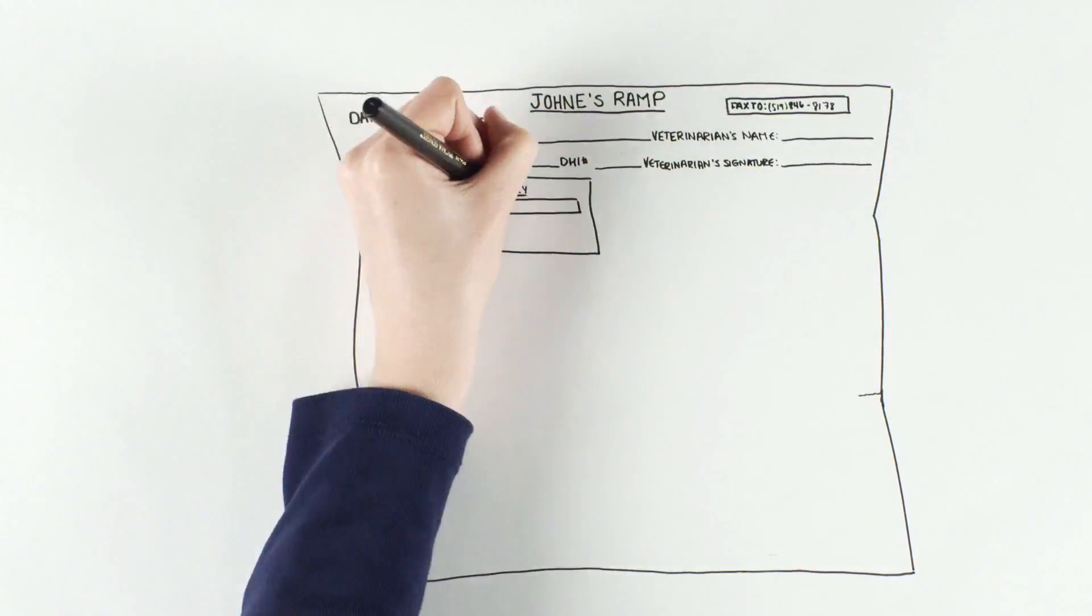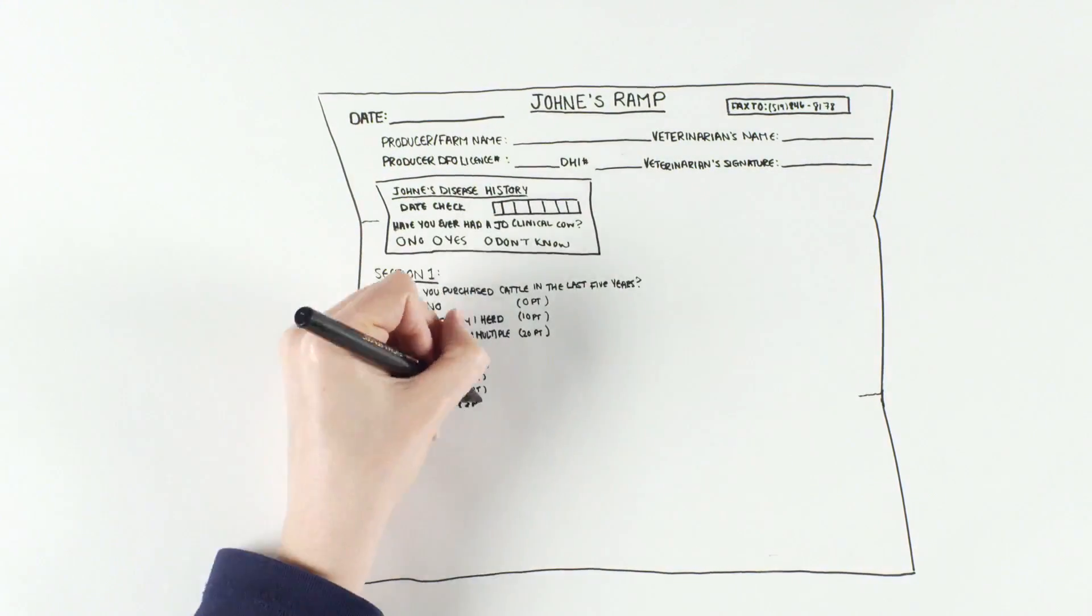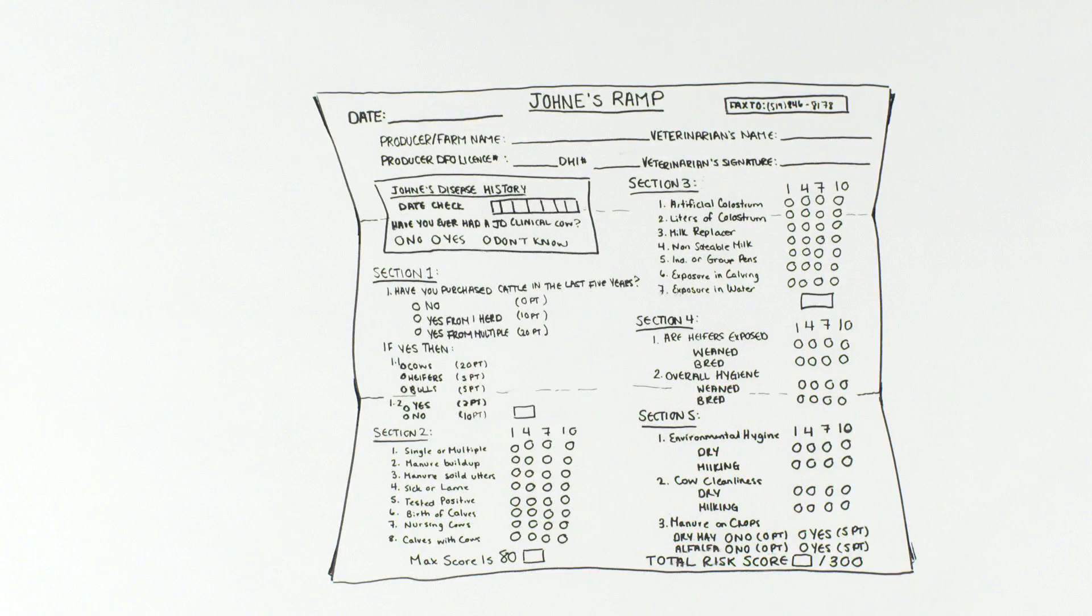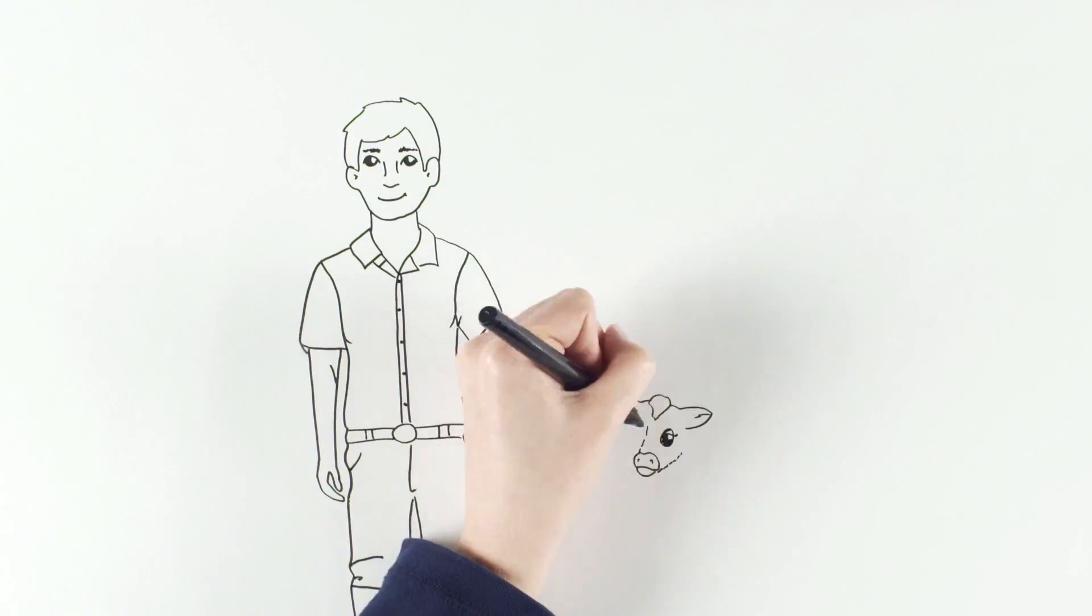Bob and I looked at his management by doing a Johne's risk assessment, a RAMP, and then plan changes he could make. Bob is great because he's motivated to change. Others, not so much.